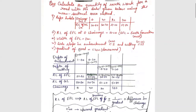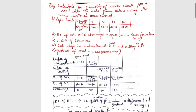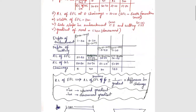We have the previous chainage value given as 51.20. So: 51.20 minus 1 upon 200 — it is minus because the gradient is downward. So minus 1 upon 200 into the difference. Next: 51 minus 1 upon 200 into 40, then 50.80 minus 1 upon 200 into 40. So we will have all the RL of EFL.